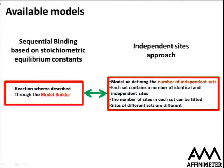Once we know the system and the available models, we need to provide input. Without our software, to use these models you would need to write the equations as described this morning, write a mass action model, write the mathematical equations, write code to minimize the fitting parameters, validate the code, and then apply the model. That process is long. Using Affinimiter, you only need to write the chemical equations — that's all.